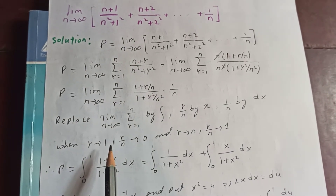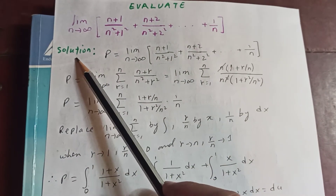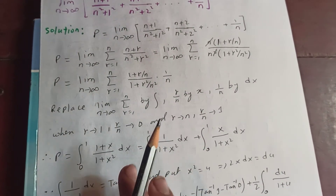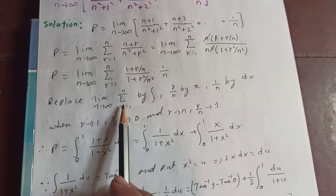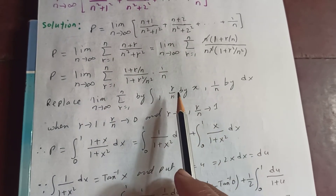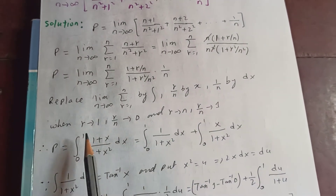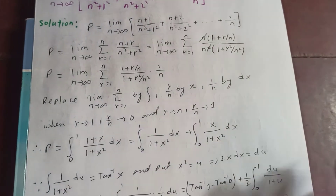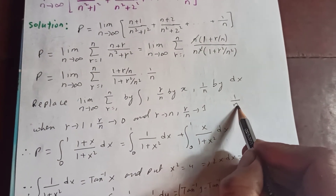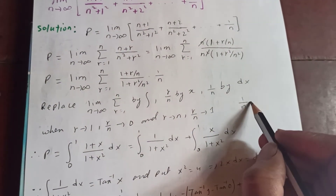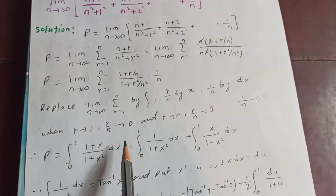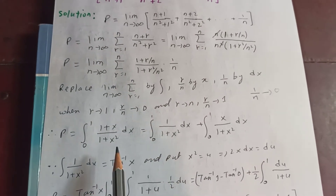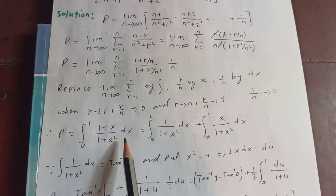Now, these types of limits can be converted into a definite integral. We replace the sum from r equal to 1 to n with an integral, replacing r by n with x and 1 by n with dx. When r equals 1, r by n tends to 0 since n tends to infinity. When r tends to n, r by n tends to 1. Therefore P equals integral from 0 to 1 of 1 plus x over 1 plus x squared dx.